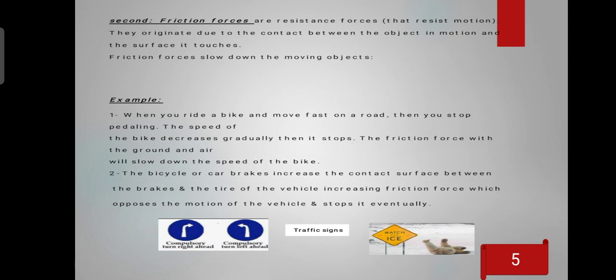Friction originates due to the contact between the object in motion and the surface on which it moves. The friction may be between solid and solid, solid and air, or solid and water. For example, when you ride a bike moving fast on the road then you stop pedaling, the speed of the bike will decrease gradually until it stops.